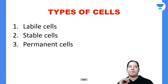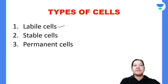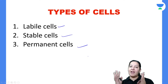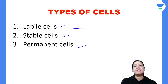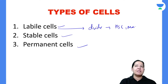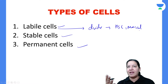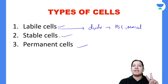Cell adaptations, cell injury, and cell death — there are three things I have to teach you. Let me start with the first: cell adaptations. In the human body, there are three types of cells: labile cells, stable cells, and permanent cells. Before studying cell adaptation, cell injury, and cell death, you should understand these different types of cells.